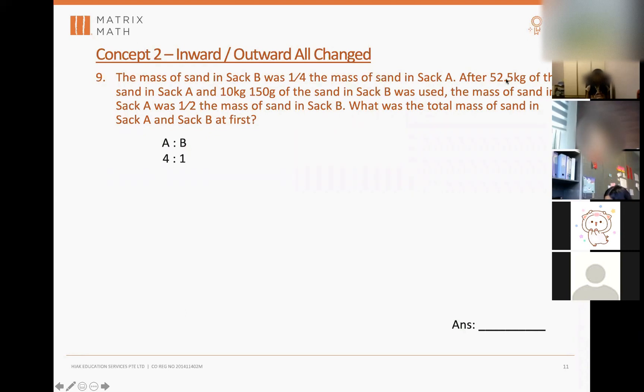I didn't change the 52.5 kilograms to grams. I just changed everything to kilograms. So 52.5 kilograms of sand in Sack A and 10 kilograms 150 grams of sand in Sack B were used. When you use, you minus. So for A you minus 52.5, for B you minus 10.15.